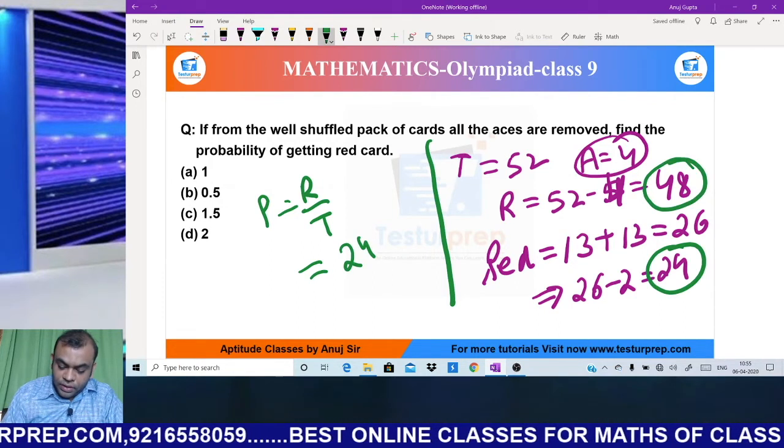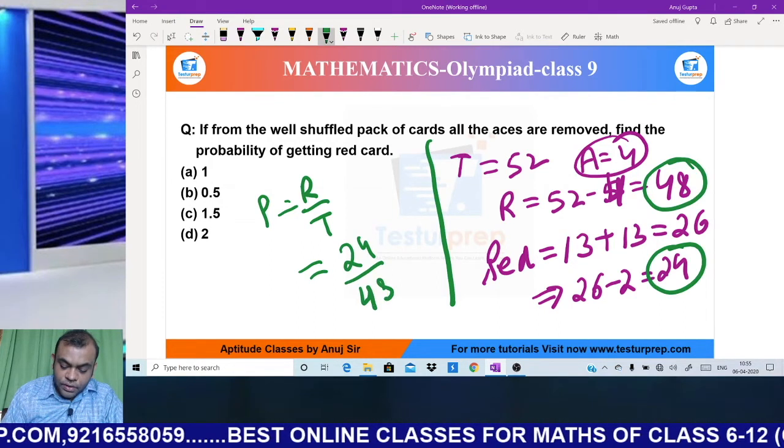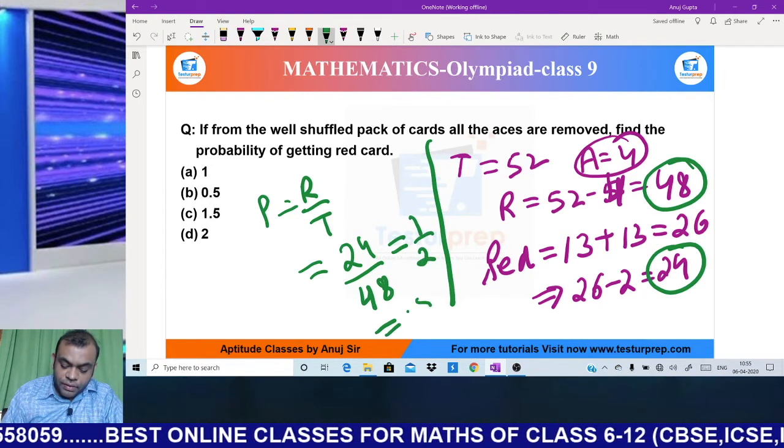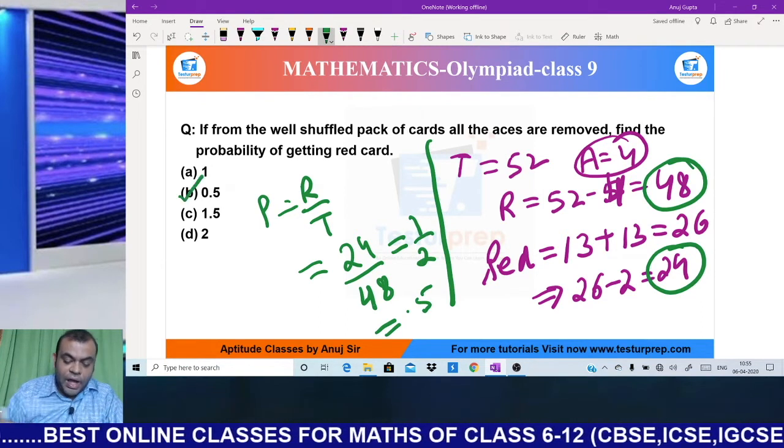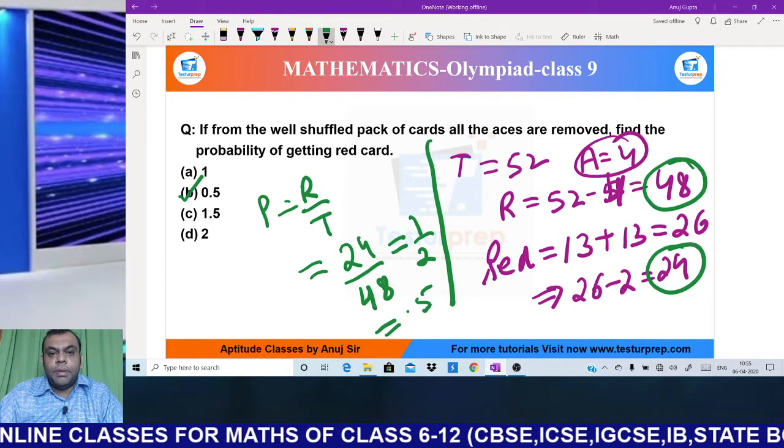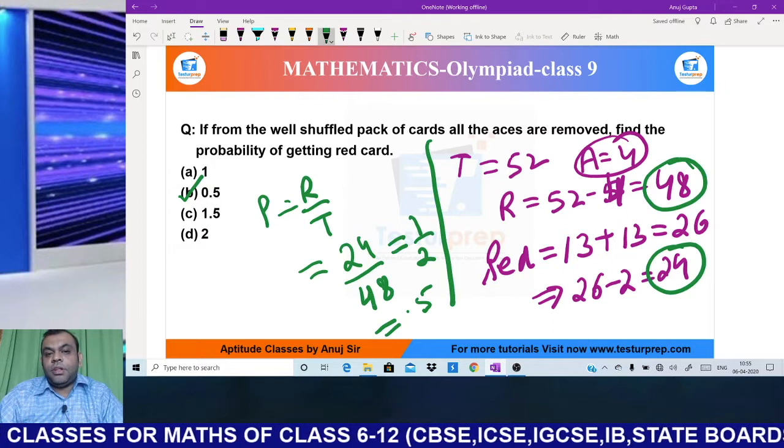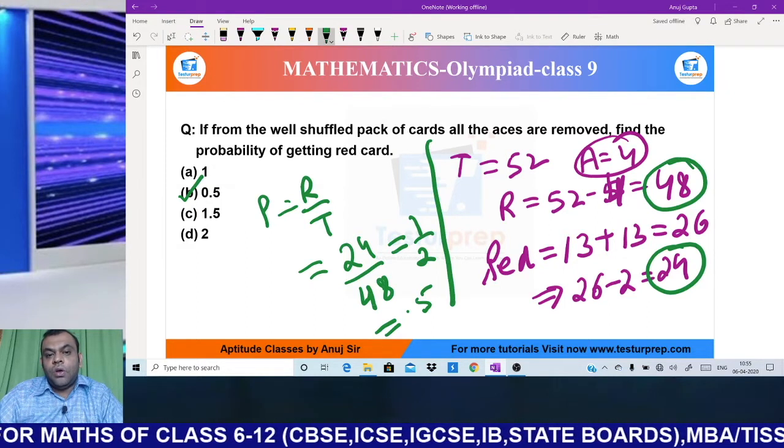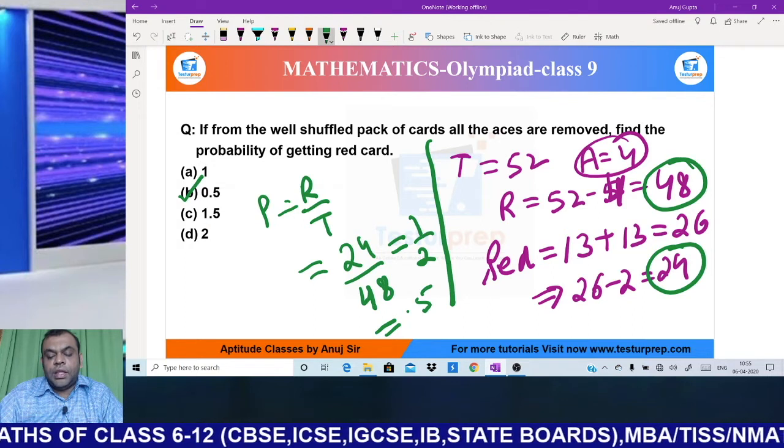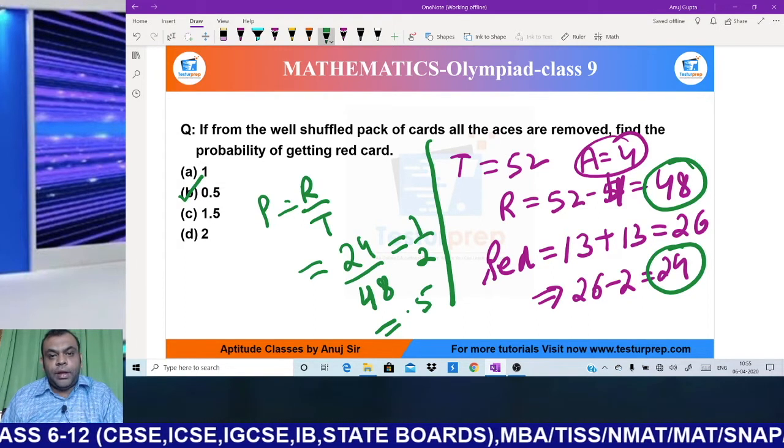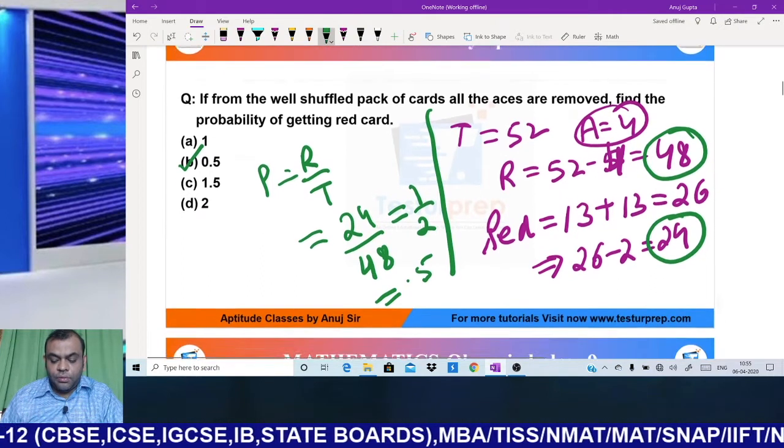Required cases are 24, total cases are 48. The answer is 24/48 = 1/2 = 0.5. Hence my answer is option B. Using a bit of logic we found required cases and total cases, divided them, and got the answer 0.5. I hope this is clear. Once clear, move on to the next question.